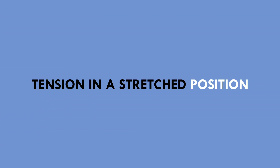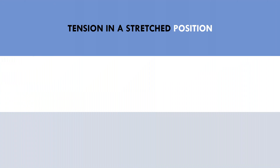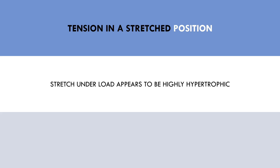The other consideration is tension in a stretched position — how much stress is placed on the muscle in a maximally stretched position. We ideally want a high degree of tension on the muscle in a stretched position, as this has some evidence to be more hypertrophic than contraction at a shortened position. Therefore, if there is variable tension throughout the lift, we ideally want to bias the stress to be higher when the muscle is in a stretched position.